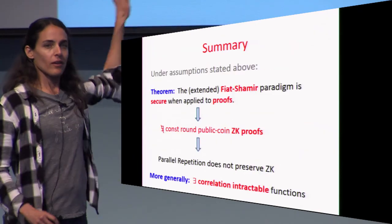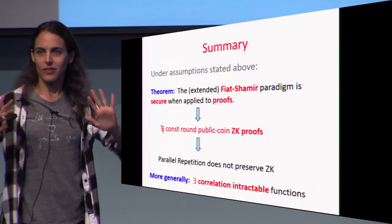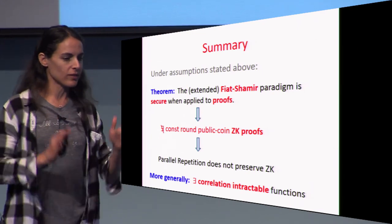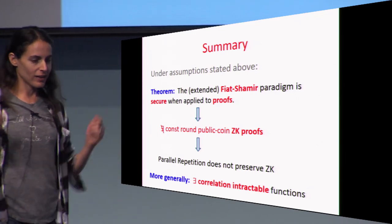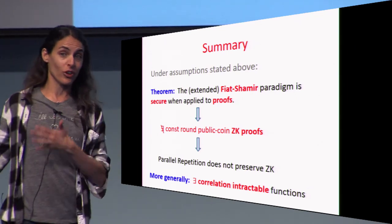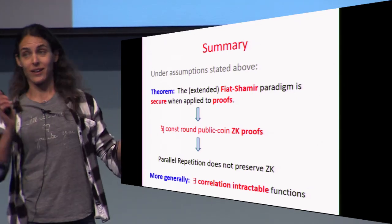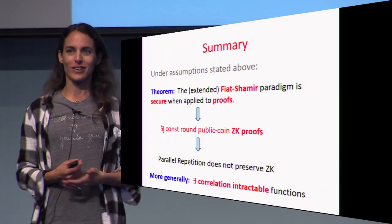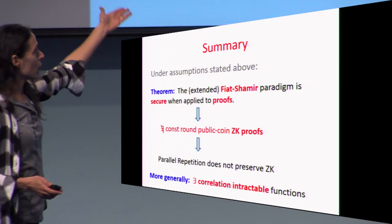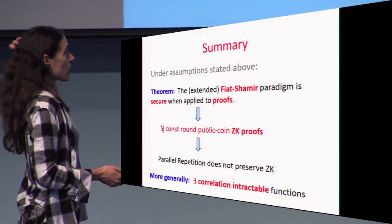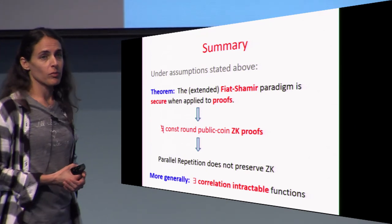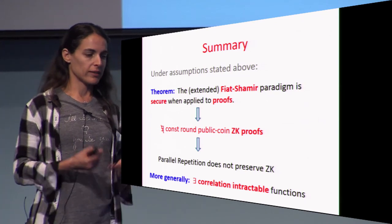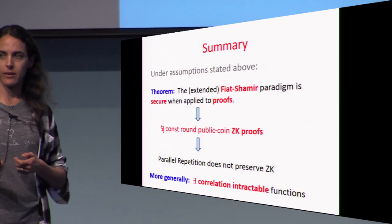To summarize: Fiat-Shamir is secure for proofs — very great news, as I've been working on this problem since grad school. It holds under strong assumptions and is inefficient, so it would be great to reduce assumptions and gain efficiency. We also get really interesting corollaries that resolve classical open problems related to zero-knowledge, correlation intractability, and so on.